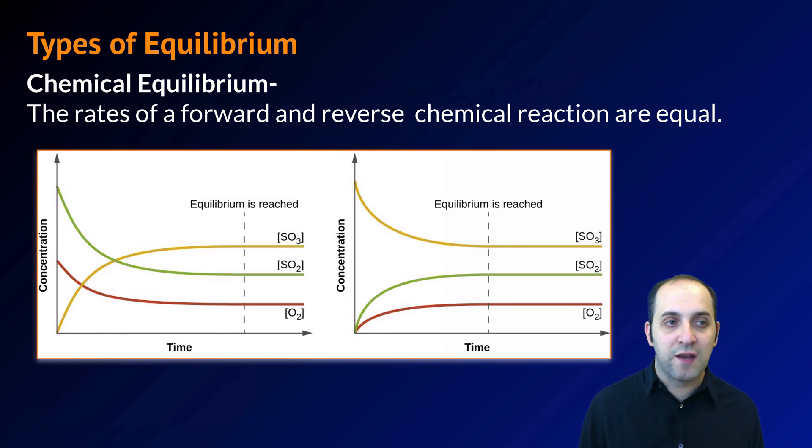There are three major kinds of equilibrium that we're going to be most focused on in chemistry. The first type is what's called chemical equilibrium. That's going to be easily the most common equilibrium that we'll deal with. That's where the rate of a forward chemical reaction and a reverse reaction are equal.